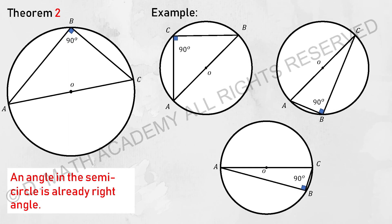Theorem number two: any angle from the diameter or semicircle will form a right angle. So AC is the diameter, hence ABC is 90 degrees. Attached is some other examples in different shape and form.